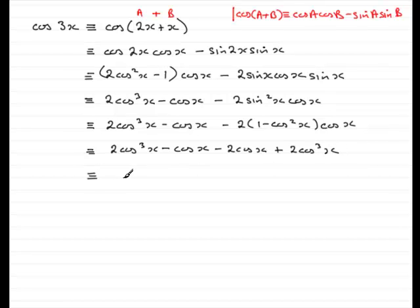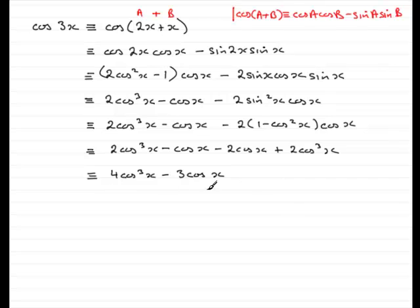So what is this identical to? We've got a total of 4cos³(x), so 4cos³(x). And then we've got minus cos(x) minus another 2cos(x), that's minus 3cos(x). And there you have cos(3x) expressed in terms of cos(x). That brings us to the end of this first part.